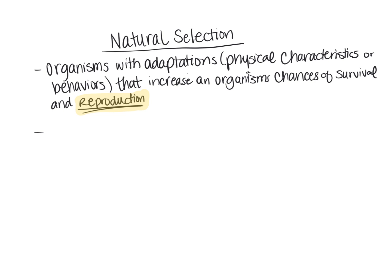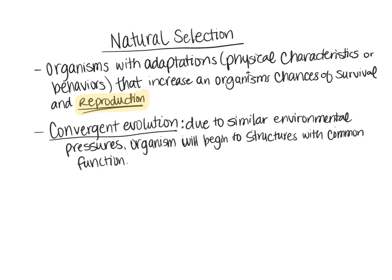And so because organisms are going to live in common environments, eventually they are going to start resembling one another or have characteristics that seem like they're the same. And this brings us to convergent evolution. So due to these similar environmental pressures, organisms will begin to share structures with very common function. But where these structures come from, or the tissue that these structures come from, may not necessarily be the same.